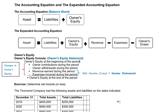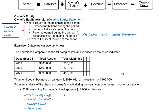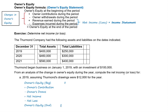Now that we've reviewed our equations, let's go ahead and solve our problem. We have a company called Thurmond Company, and they have the following assets and liabilities on the dates indicated: December 31st, 2019, 2020, and 2021, with corresponding asset and liability balances. Thurmond began business on January 1, 2019 with an investment of $100,000 — this was a brand new business.